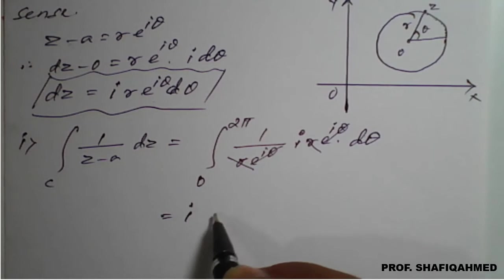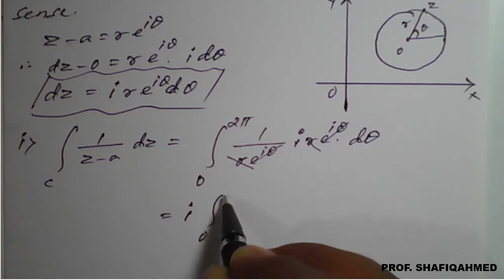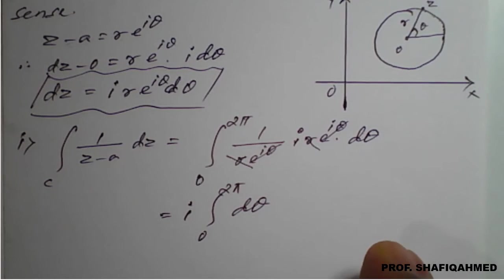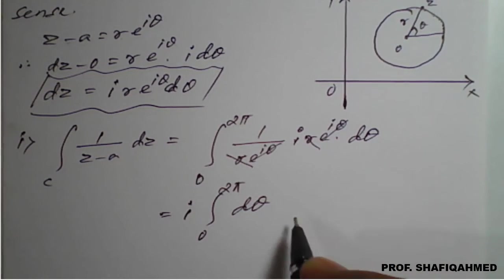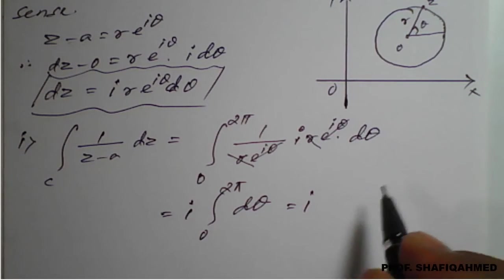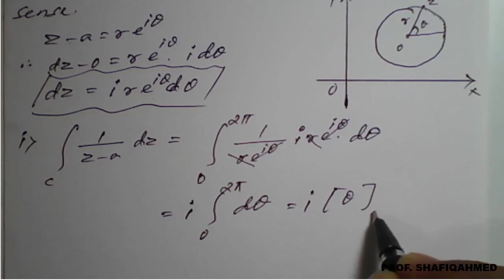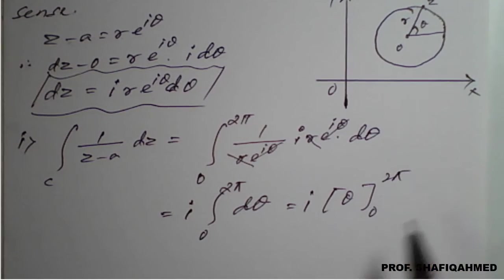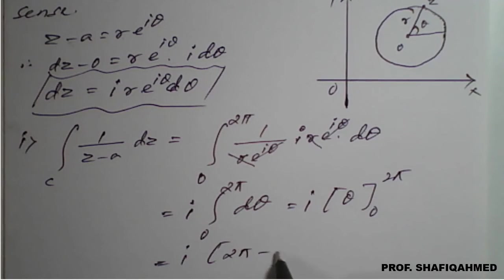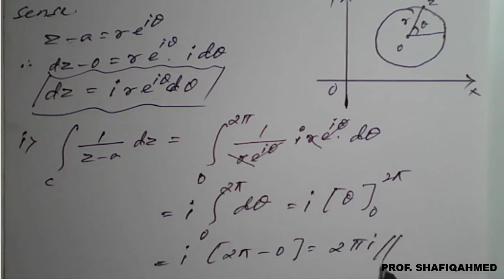This is nothing but i times the integral from 0 to 2π of dθ, which equals i times [θ] from 0 to 2π. Therefore, applying the limits gives i times (2π minus 0), which equals 2πi. This is the required result for the first part.